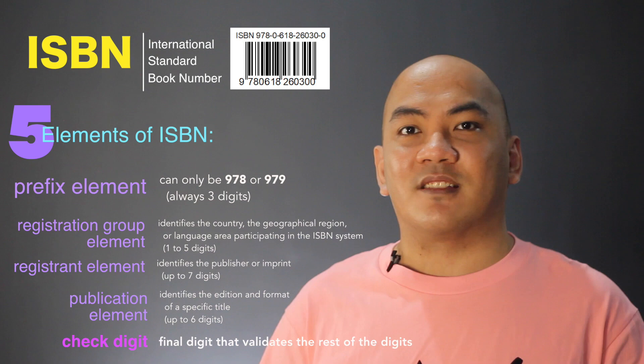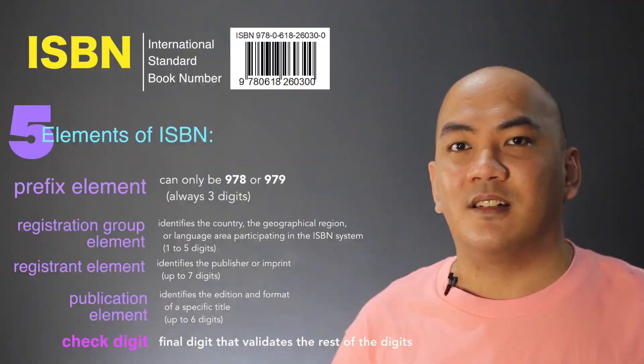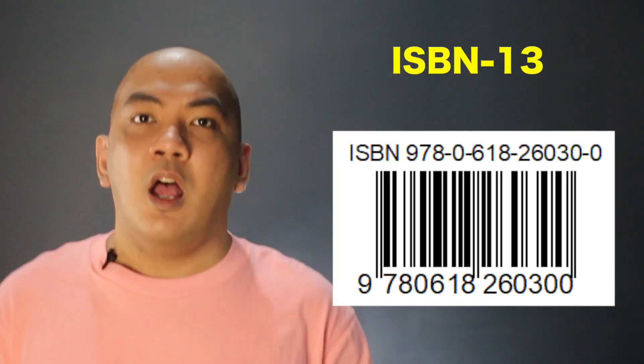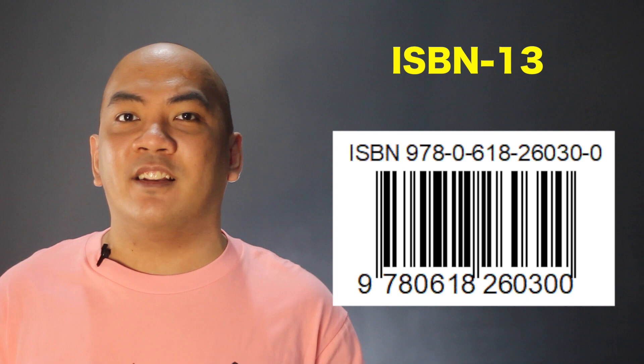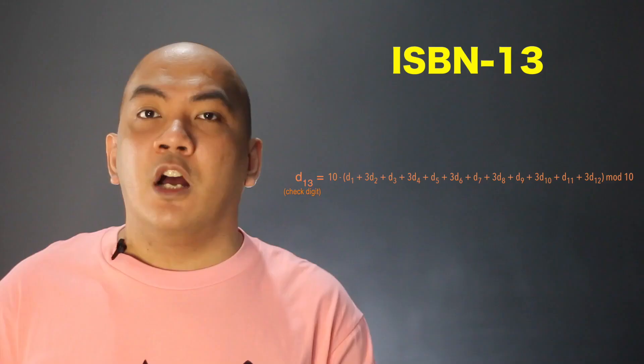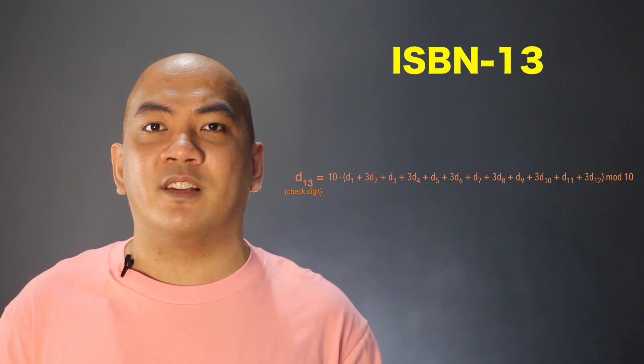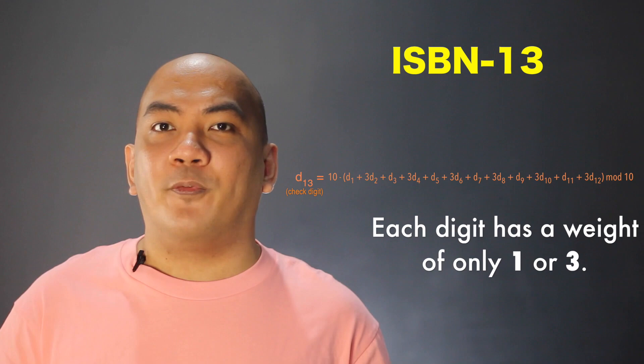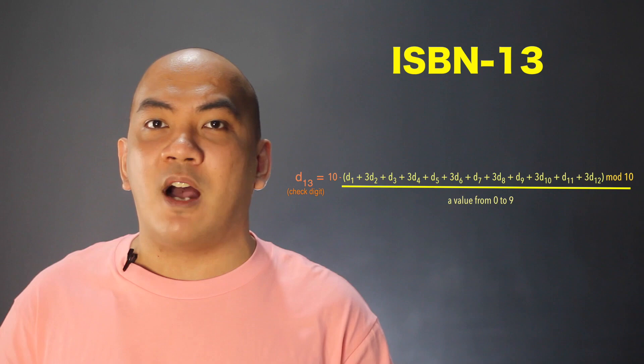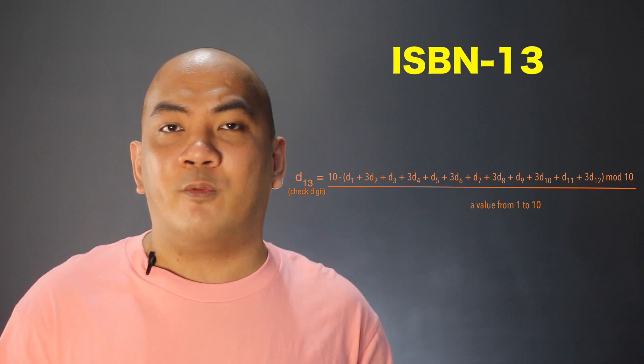For the 13-digit ISBN, also known as ISBN-13, we assign D1 as the first digit, D2 as the second, up to D13 as the final check digit. The check digit satisfies an equation where digits with even-numbered subscripts (D2, D4, D6, D8, D10, D12) are multiplied by 3, so each digit has a weight of 1 or 3. Since this quantity is in modulo 10, values range from 0 to 9, and subtracting from 10 gives 1 to 10. If D13 equals 10, we use 0 as the check digit.